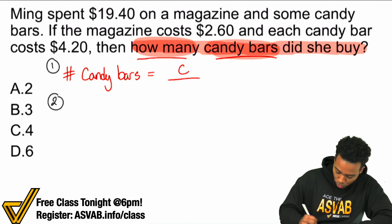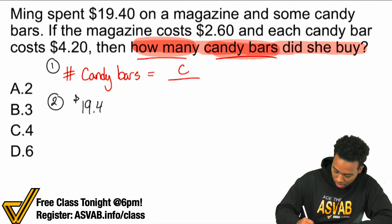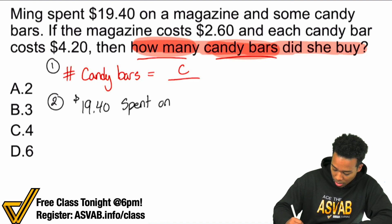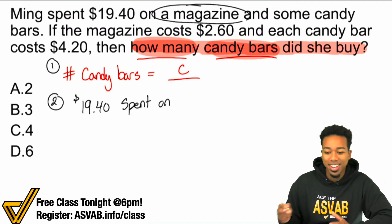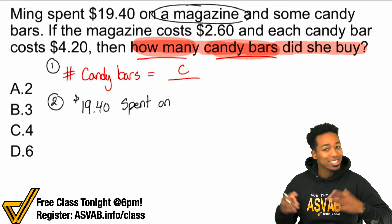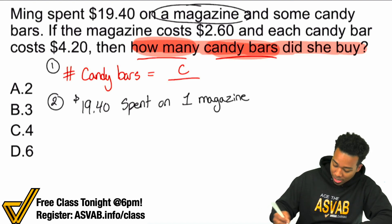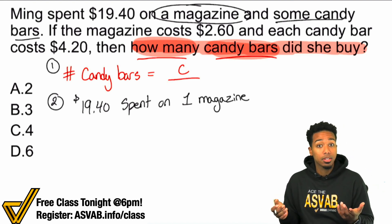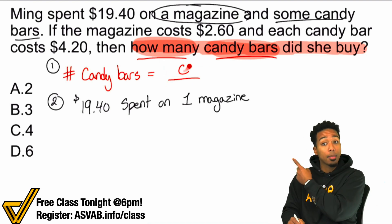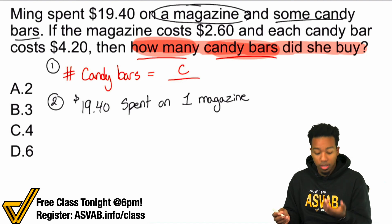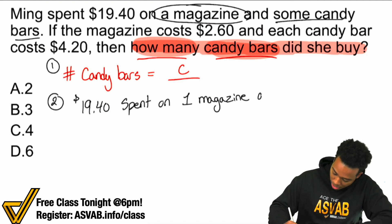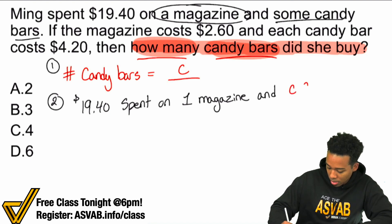Here's what I have: $19.40 spent on a magazine — and be very careful, one magazine, not two, not three, just one. So one magazine and some candy bars. Do they specify how many? No, and that's exactly what we're looking for. Remember, we're looking for how many candy bars. We don't know what that is — we're looking for it. So on one magazine and C candy bars.